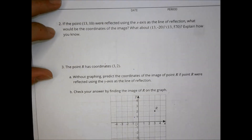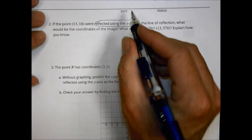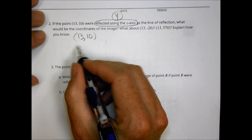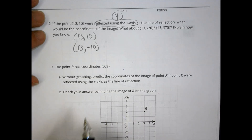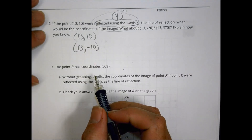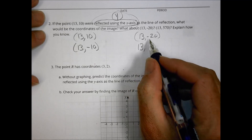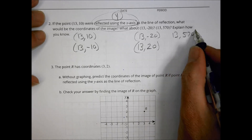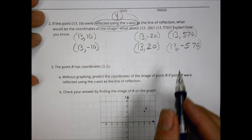Moving to problem 2: if we're reflecting across the x-axis, the y-value changes. So if I have 13, 10 and reflect, x stays the same and y changes. Likewise, 13, negative 20 reflects to 13, positive 20. And 13, 570 reflects to 13, negative 570. That's what happens every time we reflect across the x-axis.